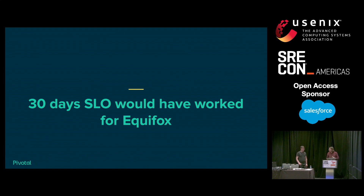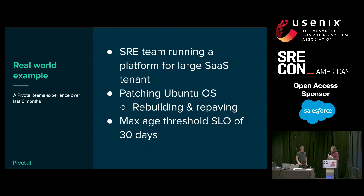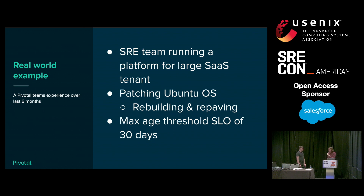In this case, a 30-day SLO would have worked for Equifax. What might this look like in the real world? We have a real-life example from Pivotal software — an SRE team running a platform for a large SaaS tenant. They've been experimenting with this idea for the last six months, thinking about patching the Ubuntu operating system for their Cloud Foundry foundations. When they patch Ubuntu, it really means rebuilding and repaving their whole system. And they've chosen a max age threshold of 30 days for their SLO.